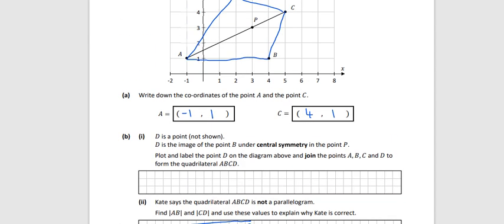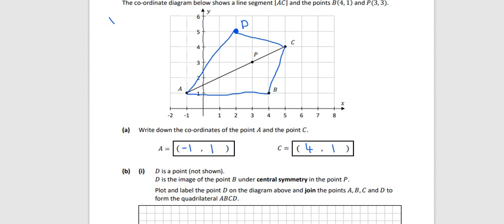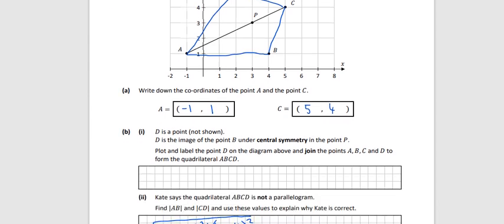I made a mistake there. They wanted point C. Some people would do that in a hurry in the exam. Point C is actually (5, 4) - we go across to 5, up to 4. I was rushing there.